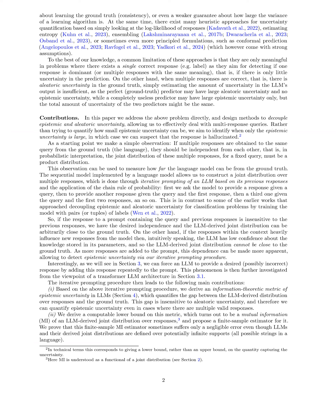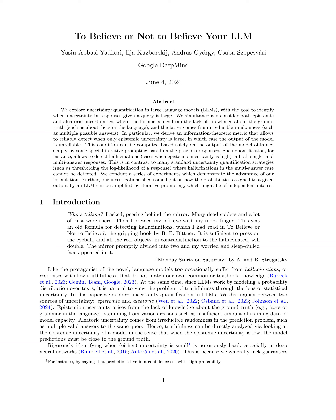The goal is to detect hallucinated responses by measuring how far the language model's output distribution is from the ground truth distribution. The algorithm uses an information-theoretic metric of epistemic uncertainty based on mutual information to quantify this gap. This metric allows for the detection of hallucinations and provides a score-based method for abstention when the model's predictions are deemed unreliable.